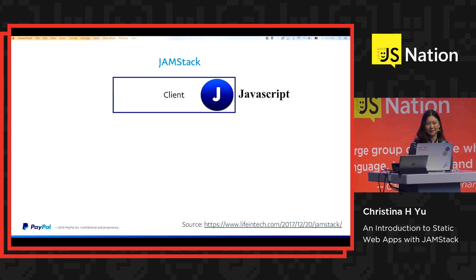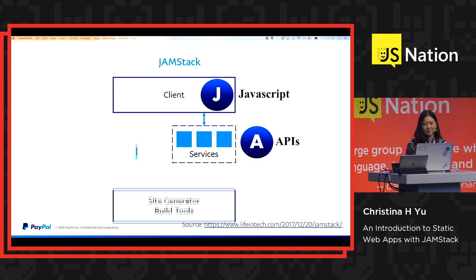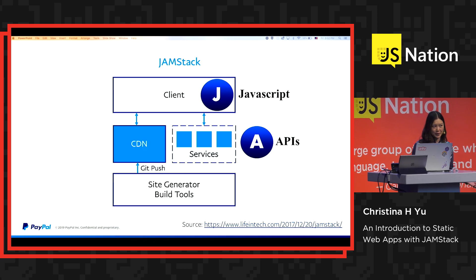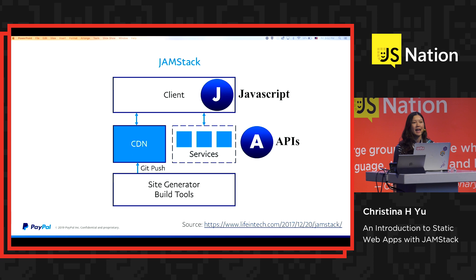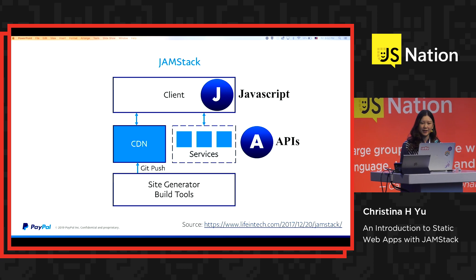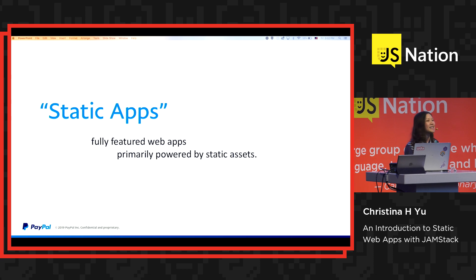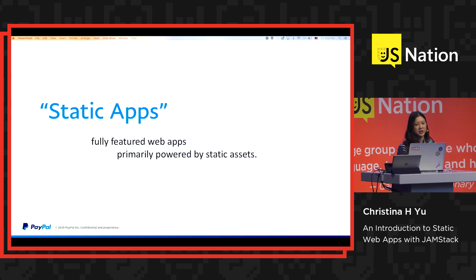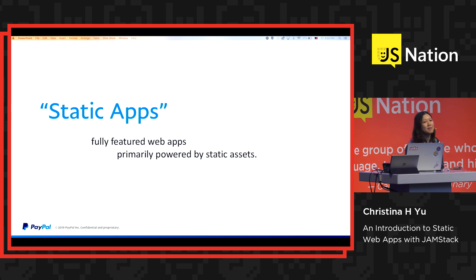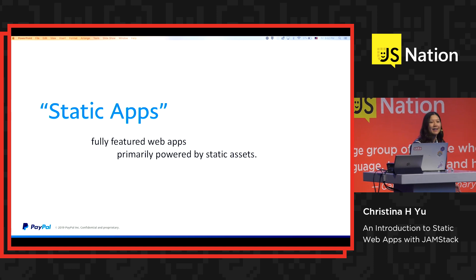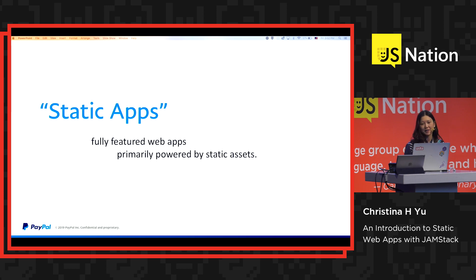This is where the JAMstack comes in. Standing for JavaScript, APIs, and Markup, the main difference with this approach from the traditional approach is the line of abstraction between UI development and API development. As a UI developer, I could build my app using a site generator into markup, push it up to the CDN, and serve it directly to clients. The results of this approach are static apps — fully-featured web apps primarily powered by static assets. Static here does not mean that these apps lack interactivity; it just refers to the way these apps are powered, served, and built.